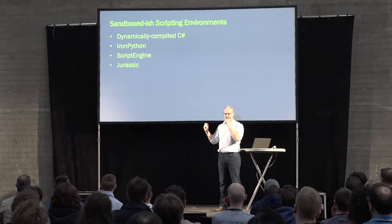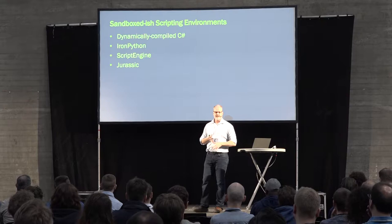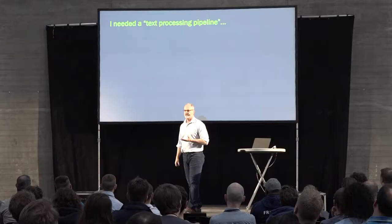One thing led to another, and I looked at many different options before settling on what I'll show you. I actually looked at dynamically compiled C-sharp — a massive mistake — Iron Python, Script Engine (the JavaScript engine in C-sharp), and Jurassic, which is Google V8 ported to a C-sharp execution environment. I implemented all of these, but they were way too far. There was no way editors were going to get this. What I really needed was just a text processing pipeline.